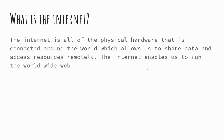The internet is essentially just all of the pieces of hardware — the cabling, the servers, switches, devices — anything that makes up our massive network of connected computers. The internet is the physical hardware that exists enabling us to run the World Wide Web, which is software-based on top of the internet. So there's a subtle difference there.